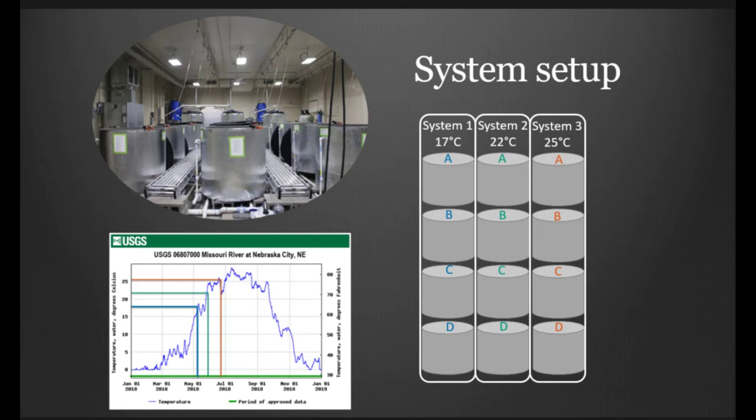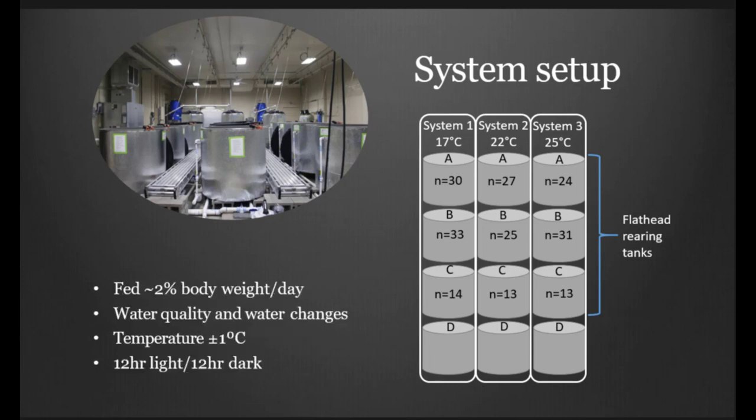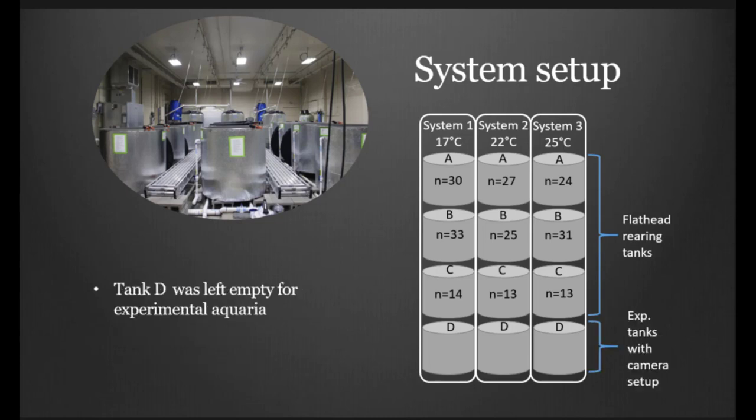We set up this lab and we set these predetermined temperatures within the lab for each system: 17, 22, and 25. We went out and collected 210 flathead catfish from the Missouri River through boat-mounted electrofishing. We were selecting for size ranges from 175 millimeters up to 400 millimeters and we were actively selecting for juvenile flathead catfish. We distributed these throughout our lab randomly within these three systems. We allowed the fish to acclimate for a three-week period within the lab and then we fed them two percent of their body weight per day, maintaining that body weight through time. We conducted water quality and water changes routinely. The temperature within the system did not actually vary by more than plus or minus one degree Celsius. There's a 12-hour light, 12-hour dark photo period in the laboratory.